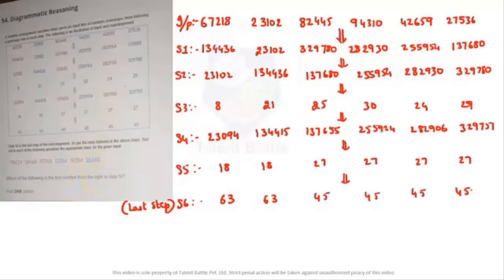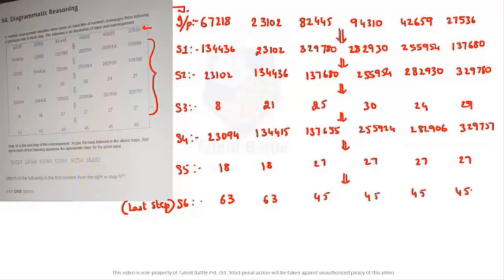Let us answer this question. These were actual questions taken from the test, so the pictures might be blurry, but for your reference I wrote the exact question. I'll read out: a number arrangement machine, when given an input line of numbers, rearranges them following a particular rule. In each step, the following is an illustration of input and rearrangement.